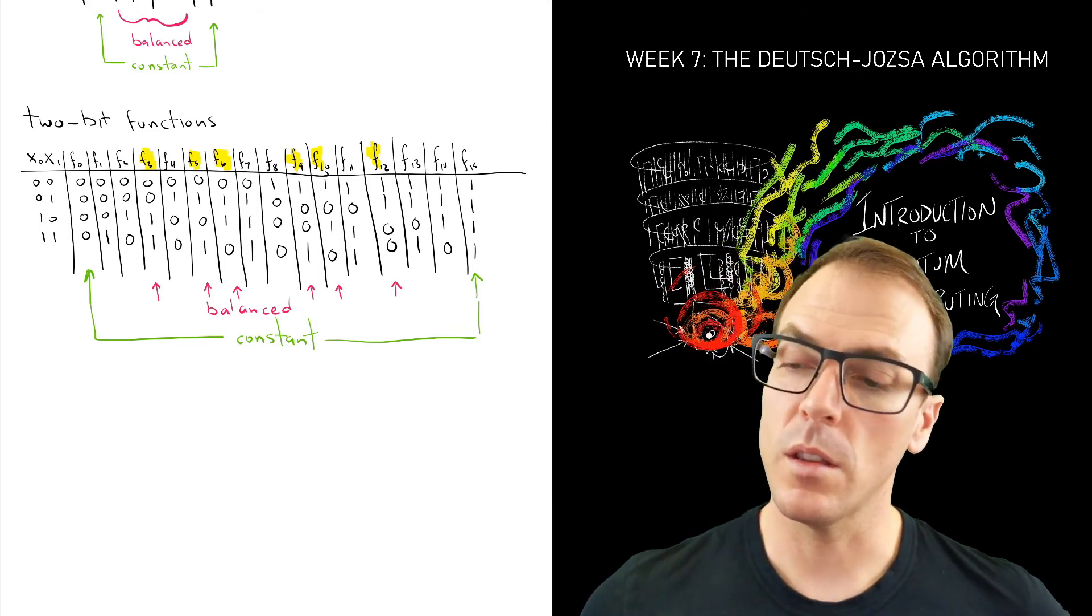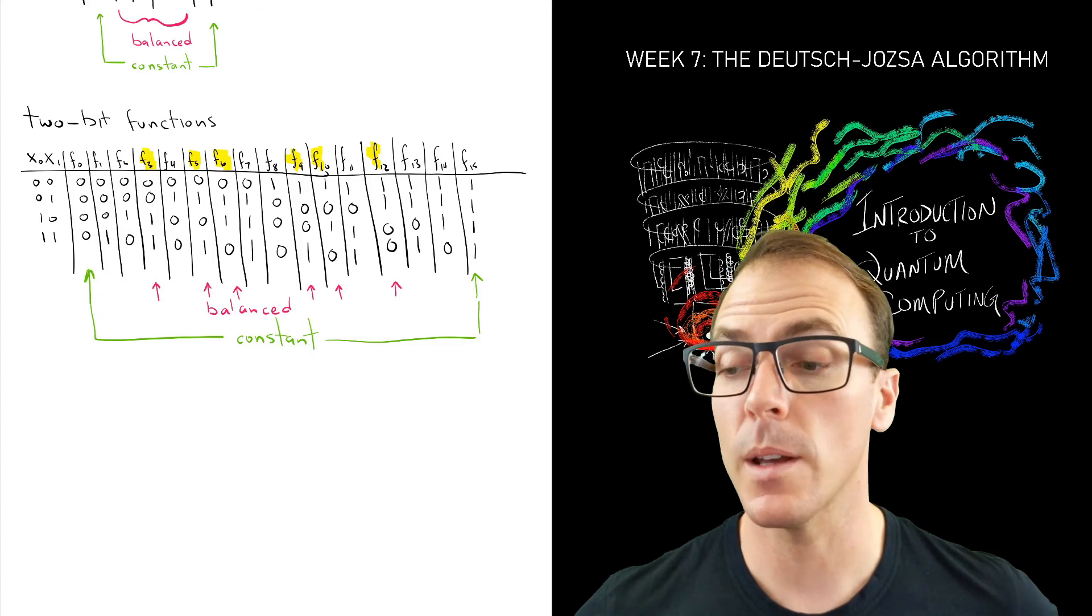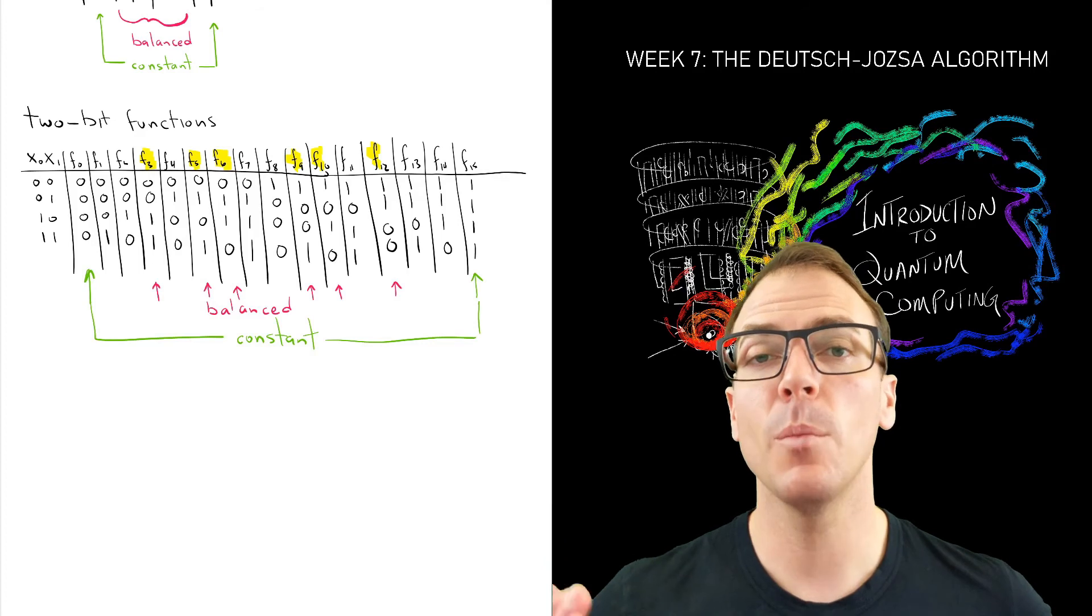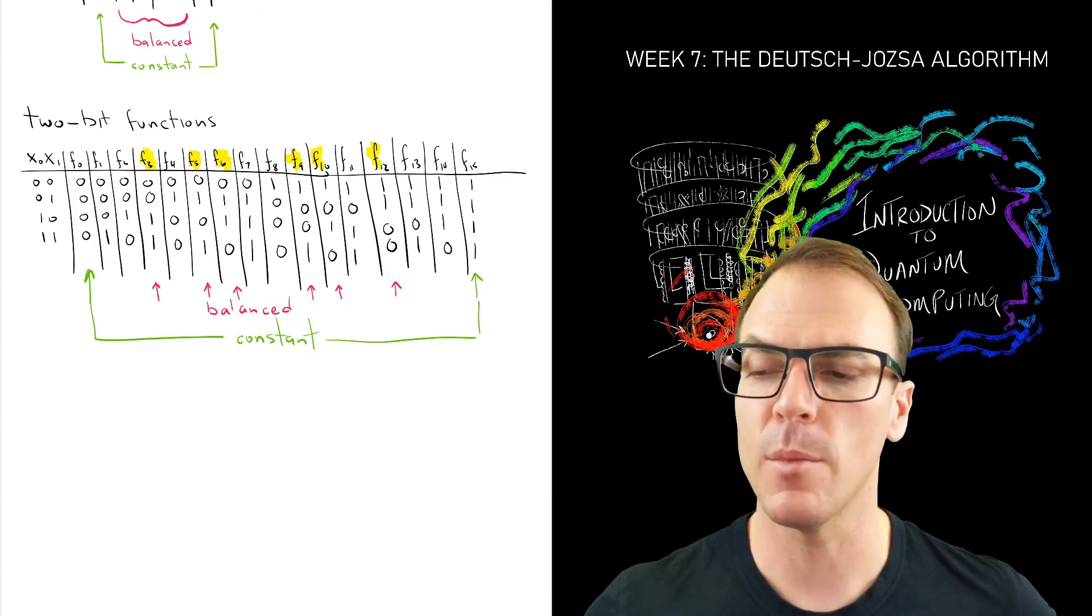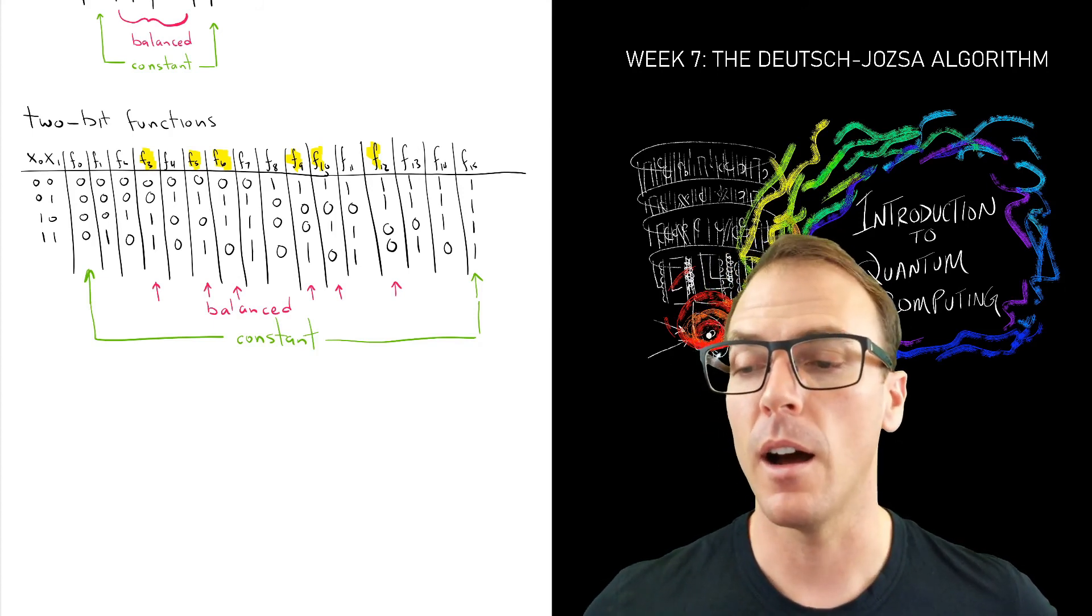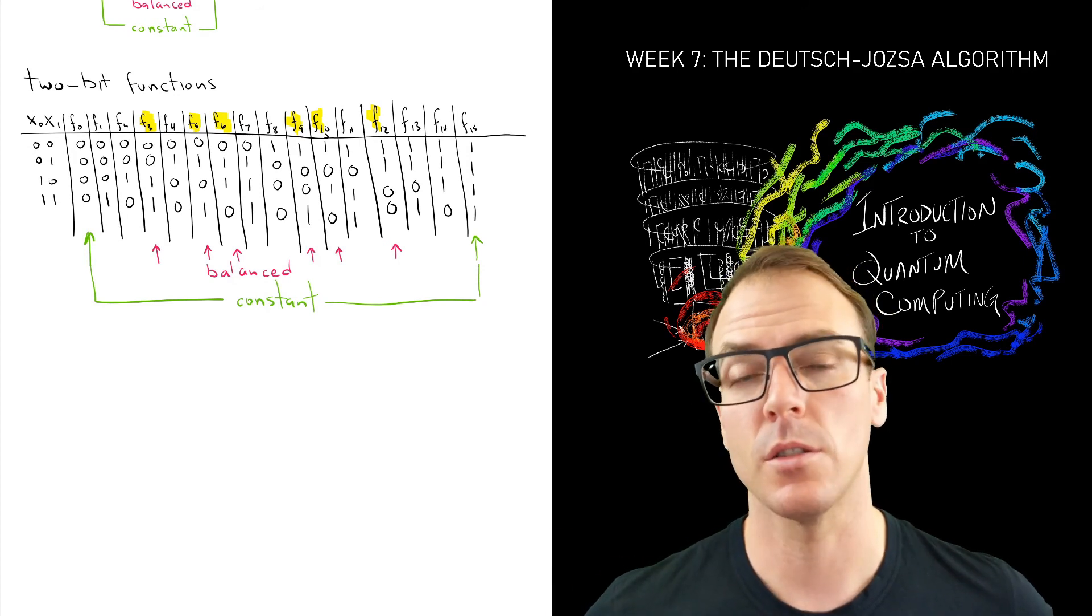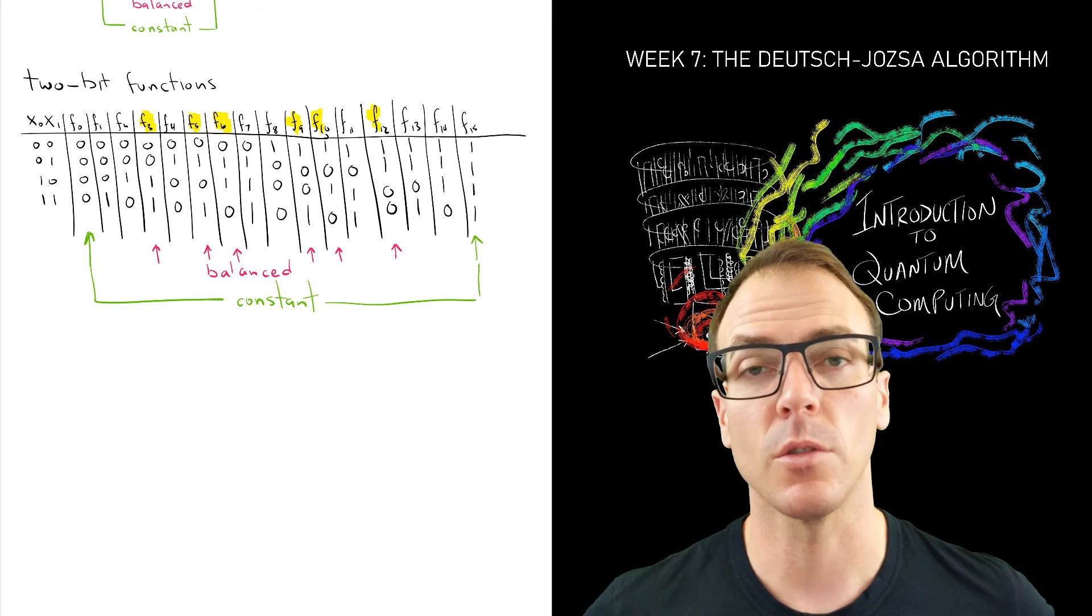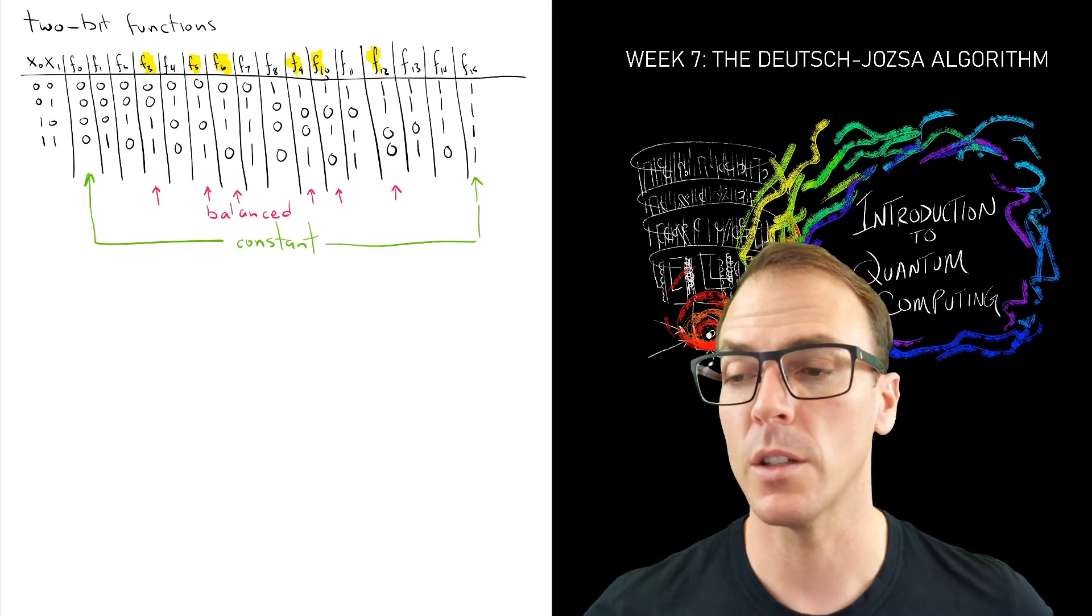Okay. So there's functions that don't have the same number of zeros and ones and are also not constant. And you can imagine as we increase the number of input bits that these will be the ones that dominate. Having that same number of zeros and ones, there'll be plenty of functions that have that property. However, the number of functions grows exponentially. The number of possible functions grows exponentially. And this is a very special structure within that set of possible functions.